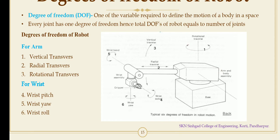The next three degrees of freedom are for the wrist. First is the wrist pitch. Wrist pitch is the upward and downward rotation or pitching of the wrist about the horizontal axis.